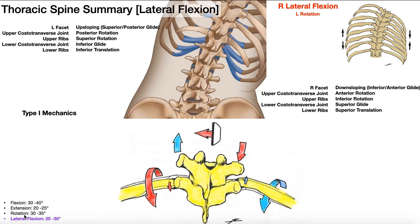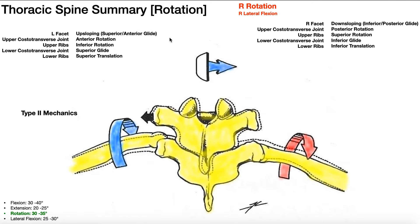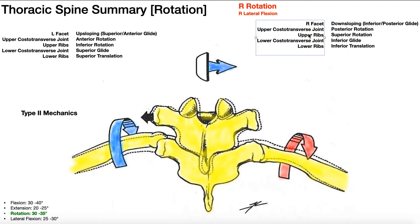The range of motion for lateral flexion in the thoracic spine is typically about 25 to 30 degrees passively, and it follows type 1 mechanics where lateral flexion and rotation occur in opposite directions. For rotation, they occur in the same direction, following type 2 mechanics. So if I rotate my spine to the right, I'll have a little bit of right lateral flexion. We can now talk about what happens on the right facet joints and right ribs, and also the left facet joint and left ribs, during rotation.